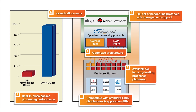6Wingate includes a comprehensive suite of optimized layer 2 through layer 4 networking protocols that represent a complete data plane solution for networking equipment. This avoids the need for developers to integrate protocols from multiple suppliers, accelerating their overall time to market and again reducing their schedule risk.